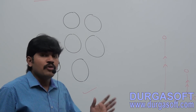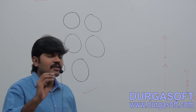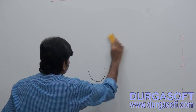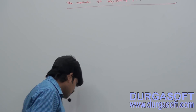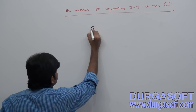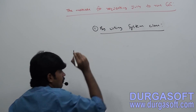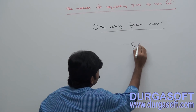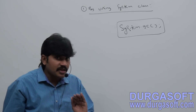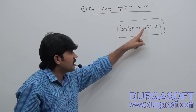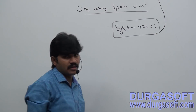What are the various ways to request JVM to run garbage collector? There are two ways. The first way is by using the System class. System class contains a static method called GC for this purpose. By using System.gc() static method, we can request JVM to run garbage collector. Most programmers use this approach.